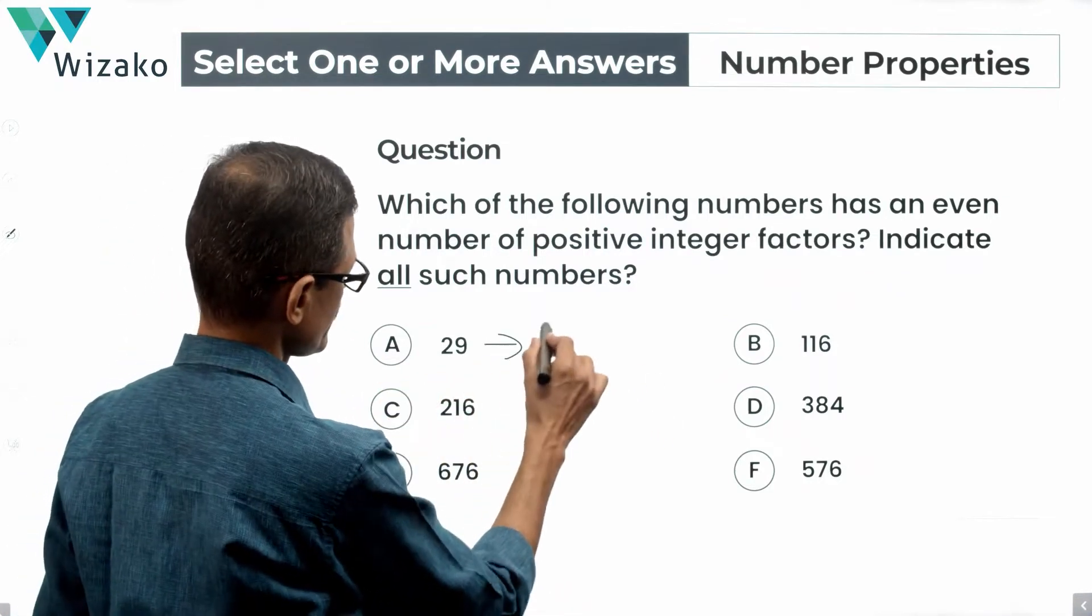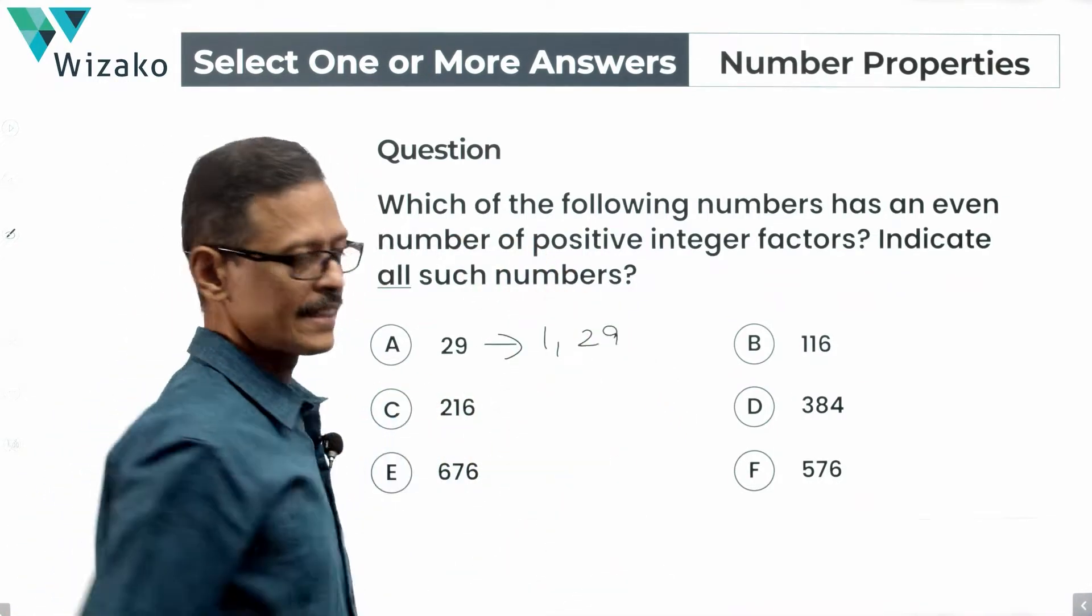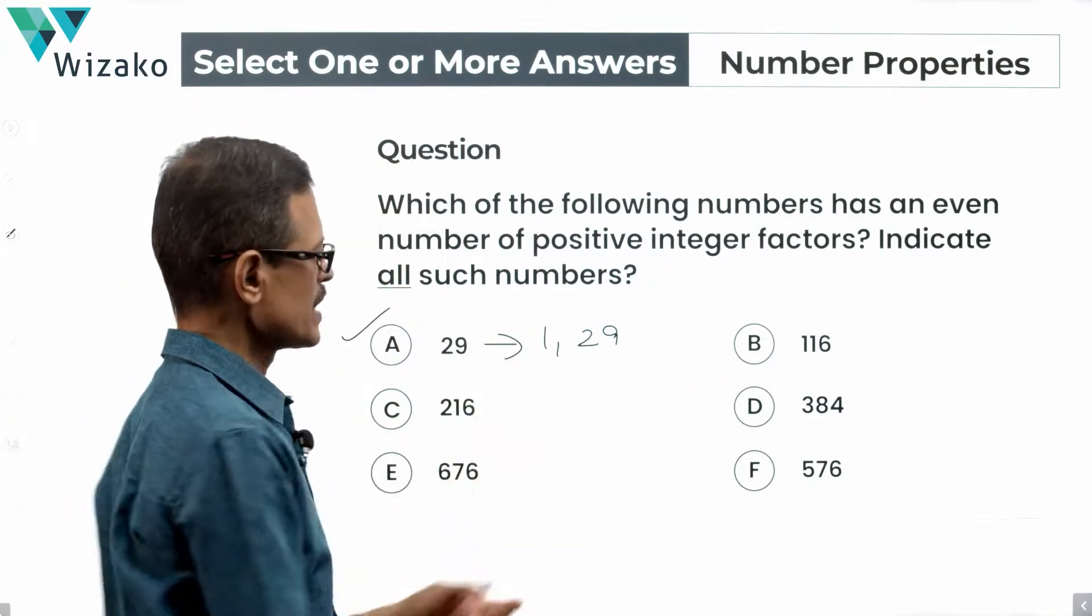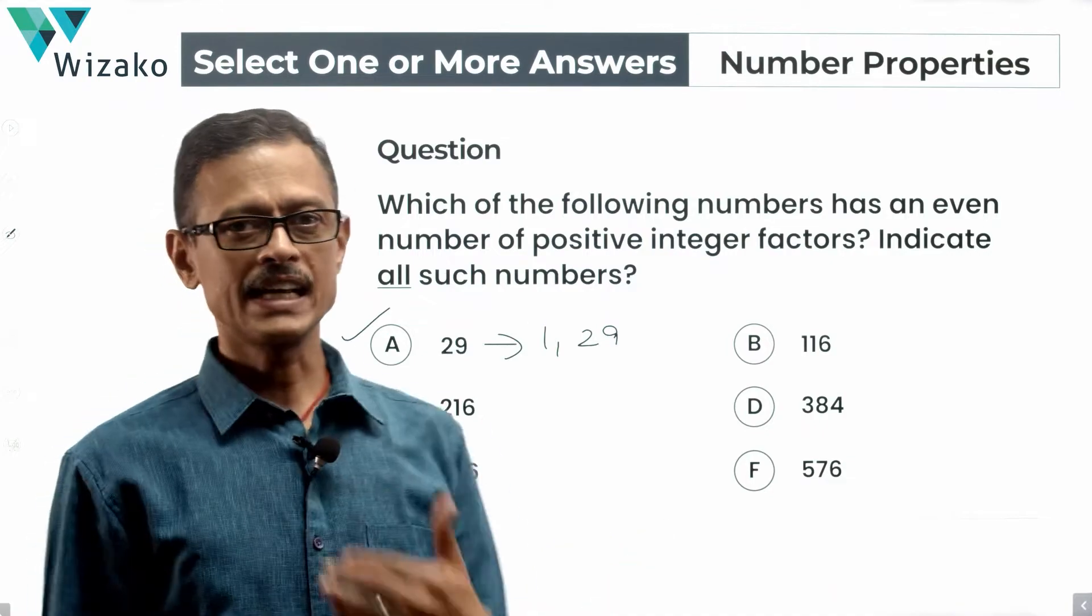For example, for 29, the factors will essentially be 1 and 29. It's a prime number, two factors. Does it have an even number of factors? Yes. So A is definitely one of the answer options. Run through the entire list that way and get to the answer.